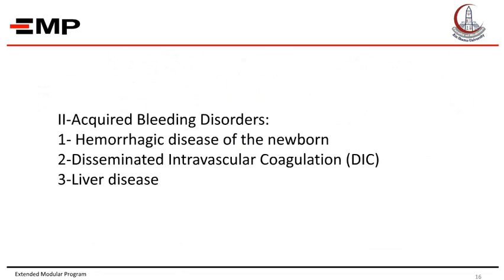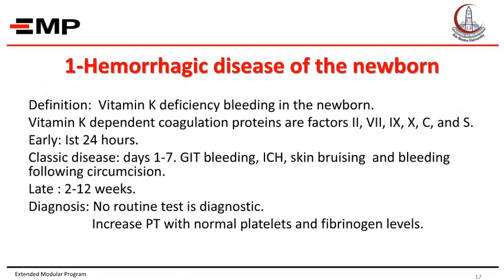Acquired bleeding disorders include hemorrhagic disease of the newborn, disseminated intravascular coagulation (DIC), and liver disease. Hemorrhagic disease of the newborn is defined as vitamin K deficiency bleeding. Vitamin K-dependent coagulation proteins are factors 2, 7, 9, 10, protein C, and S. Early presentation occurs in the first 24 hours, usually in infants born to mothers on oral anticoagulants, anticonvulsants, or antitubercular treatment, and presents as serious bleeding including intracranial hemorrhage.